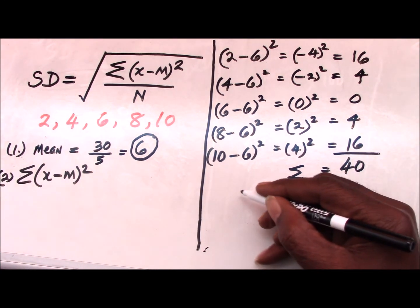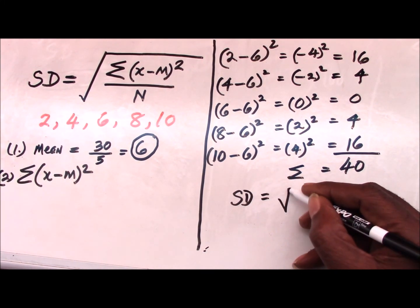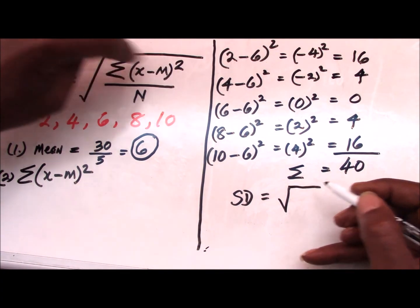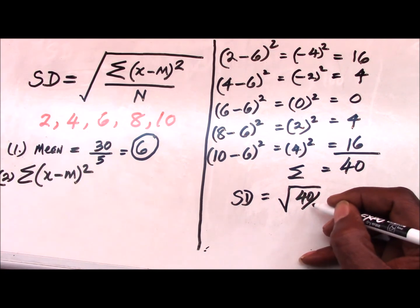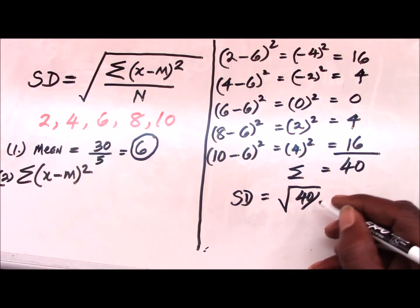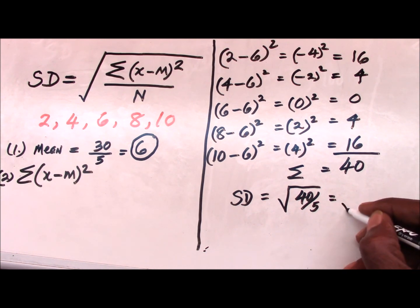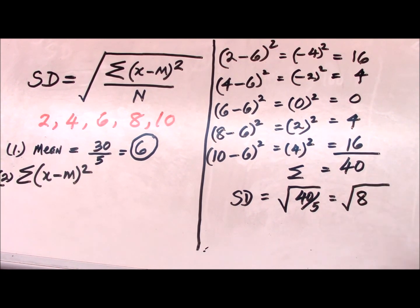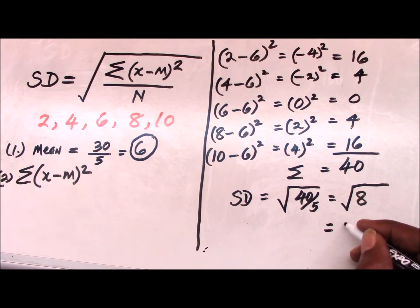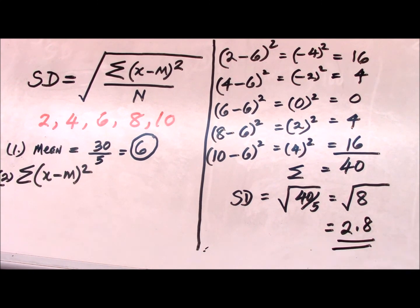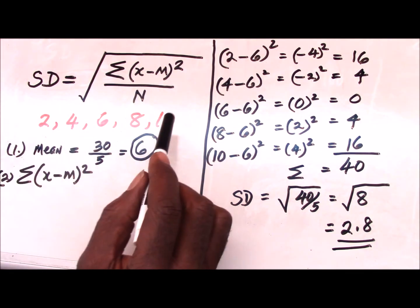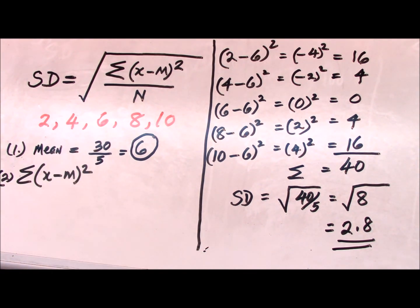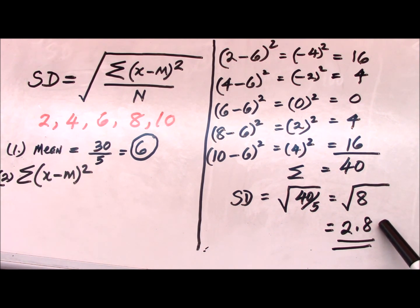We are almost done. The standard deviation, according to the formula, is the square root of 40 divided by n, where n equals 5 values. So this becomes the square root of 8, which equals 2.8. That is the answer. It is important that you have this formula on your flash card, then use this simple set of numbers and try it a couple of times. I encourage you to do it at least 3 times on your own to arrive at this answer, which will give you the assurance that you are on the right track.